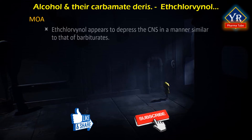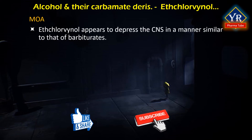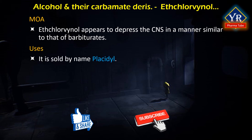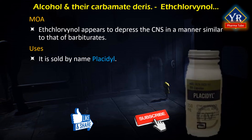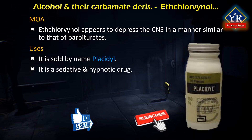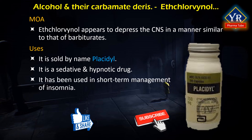Although ethchlorvynol's mechanism of action is not known, it appears to depress the central nervous system in a manner similar to that of barbiturates. Barbiturates bind at a distinct binding site associated with the chloride ionophore at the GABA-A receptor, increasing the duration of time for which the chloride ionophore is open; the post-synaptic inhibitory effect of GABA in the thalamus is therefore prolonged. Ethchlorvynol is sold by Abbott Laboratories under the trade name Placidyl. It is a sedative and hypnotic drug used in the short-term management of insomnia; its use has been superseded by other drugs.